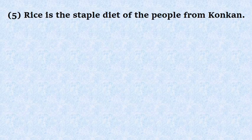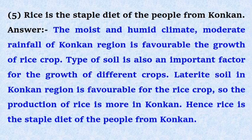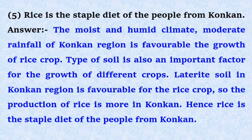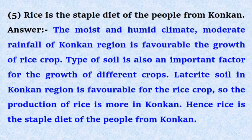Fifth, rice is the staple diet of the people from Konkan. Answer: The moist and humid climate and moderate rainfall of the Konkan region is favorable for the growth of rice crop. Type of soil is also an important factor for the growth of different crops. Laterite soil in the Konkan region is favorable for rice crop. So the production of rice is more in Konkan, and hence rice is the staple diet of the people from Konkan.